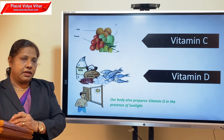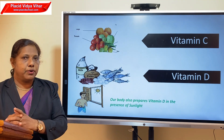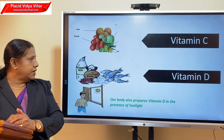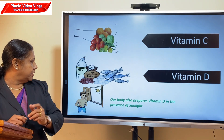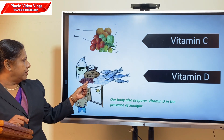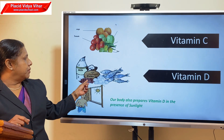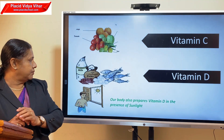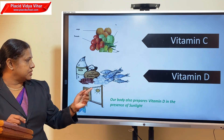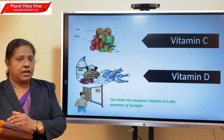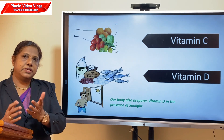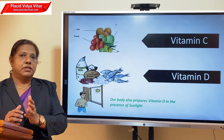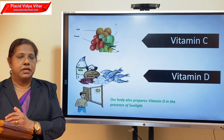Now let's move on to vitamin D. Vitamin D helps the body to use calcium for bones and teeth. We get vitamin D from milk, butter, egg, fish, and liver. Our body also prepares vitamin D in the presence of sunlight, so insufficient exposure to sunlight will cause a deficiency of vitamin D in our body.